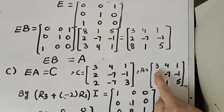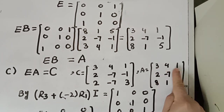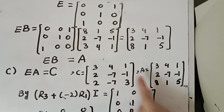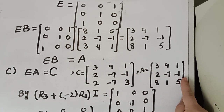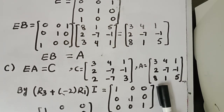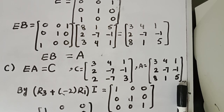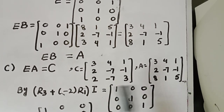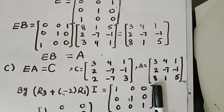You can see the first row of matrix A is similar to the first row of matrix C. The second row of matrix A is similar to the second row of matrix C, but the third row of matrix A has changed. We will convert the third row from A to C, so we will do a row operation.